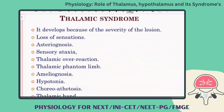Thalamic syndrome: if a person has a lesion in the thalamus, all sensations will be defective. This is called thalamic syndrome. The syndrome develops depending on the severity of the lesion, the nature of the lesion, and the cause of the lesion.